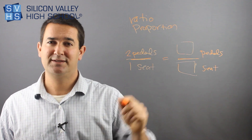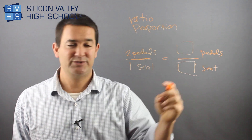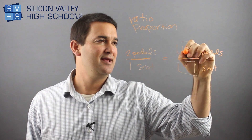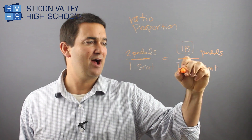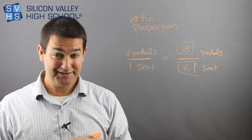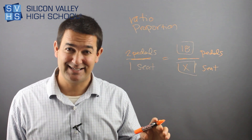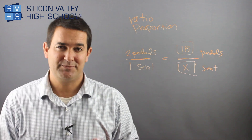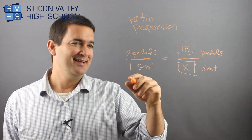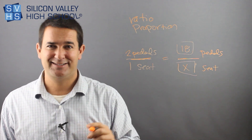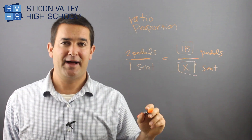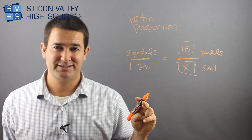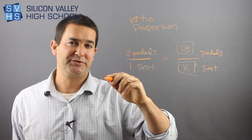You always have two pedals for every one seat. How many seats would you have if you had 18 pedals? You blindly plug in what they said: 18 pedals for every how many seats. 'How many' is always a variable — it's always X. Proportions are best solved by doing cross multiplication. A lot of smart kids would say they can just do it in their head, but I wouldn't do that because sometimes it gets tricky with decimals or hard fractions. So I would always cross multiply.